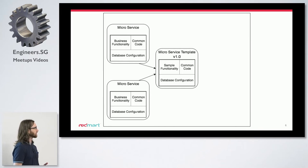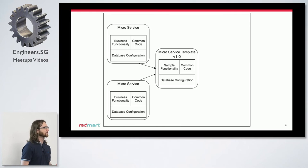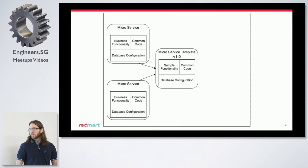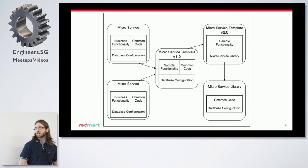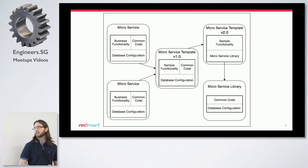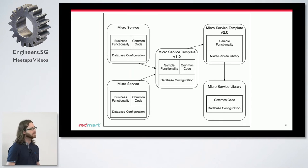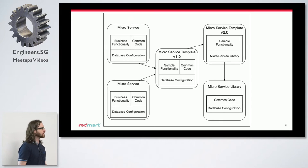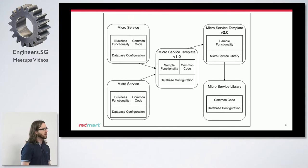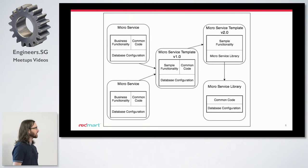Also, if anyone had a really cool idea that they implemented in their own service, it was difficult to propagate that to other services. So the second version of the microservice template only has sample functionality, and then it includes the microservice library. Inside the microservice library, we abstracted away all the common duplicated code as well as all the configuration setup. So now keeping things in sync is just as easy as increasing your dependency version.